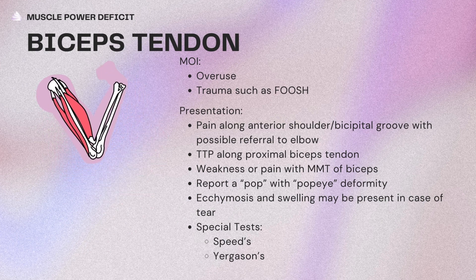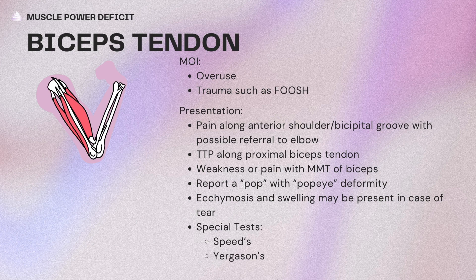Starting off: biceps tendon. Biceps tendon pathology is microtrauma to the biceps tendon which can begin as an acute inflammatory disorder such as tendonitis but can lead to degenerative changes such as tendinosis. You could also have a rupture of the proximal biceps tendon, which typically occurs at the long head of the biceps. This can happen due to trauma such as falling on an outstretched hand. Presentation will be pain along the anterior shoulder, bicipital groove area with potential referral to the elbow. It's going to be tender to palpate on the proximal biceps tendon, with weakness and pain with biceps manual muscle testing. The patient might report a pop or you might see a pop-eye deformity where the biceps has rolled up, and there might be ecchymosis and swelling if a tear is present.